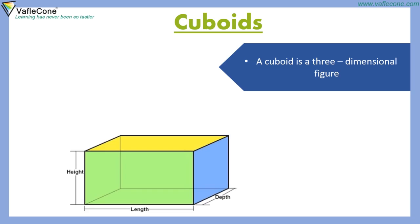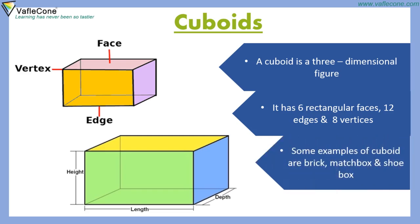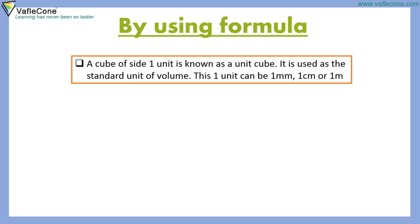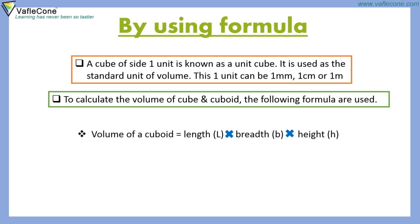Cuboid: A cuboid is a 3-dimensional figure. It has 6 rectangular faces, 12 edges and 8 vertices. Examples of cuboids include a brick, match box and shoe box. A cube of side 1 unit is known as a unit cube and is used as the standard unit of volume. This one unit can be 1 mm, 1 cm or 1 m. Volume of a cuboid = length into breadth into height. Volume of a cube = side into side into side.